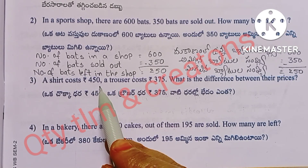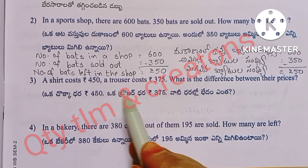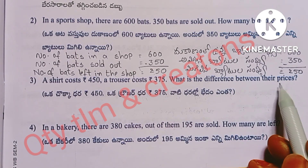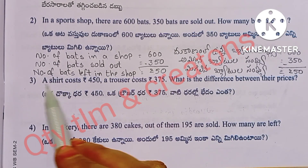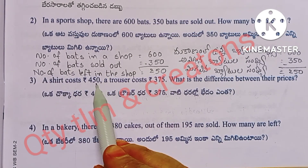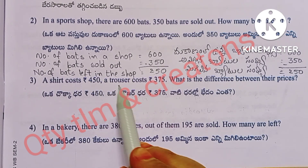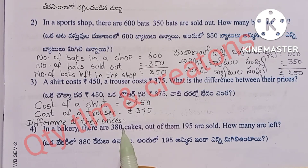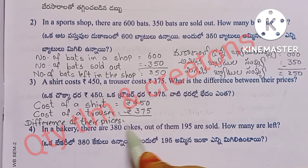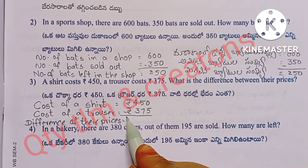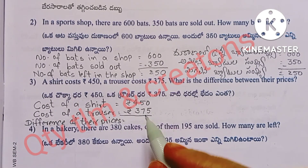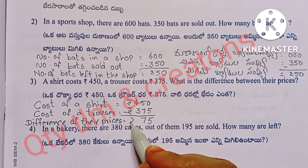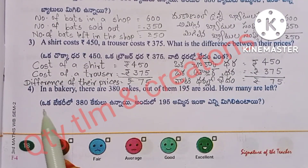Next question: A shirt costs 450 rupees and a trouser costs 375 rupees. What is the difference between their prices? Cost of a shirt: 450 rupees. Cost of a trouser: 375 rupees. We subtract 375 from 450 and get 75 rupees difference.